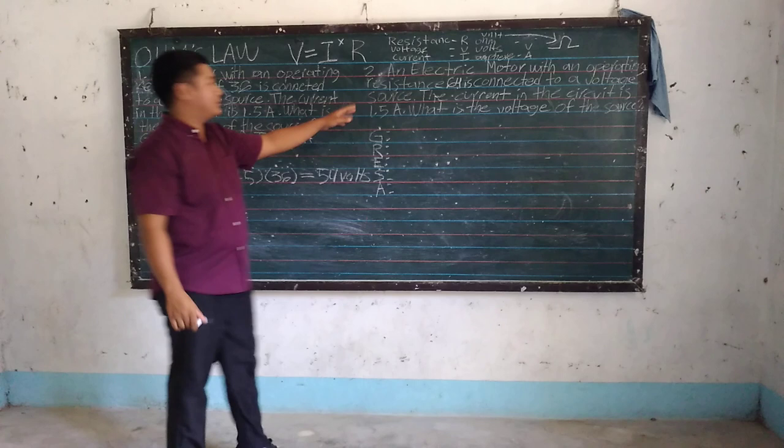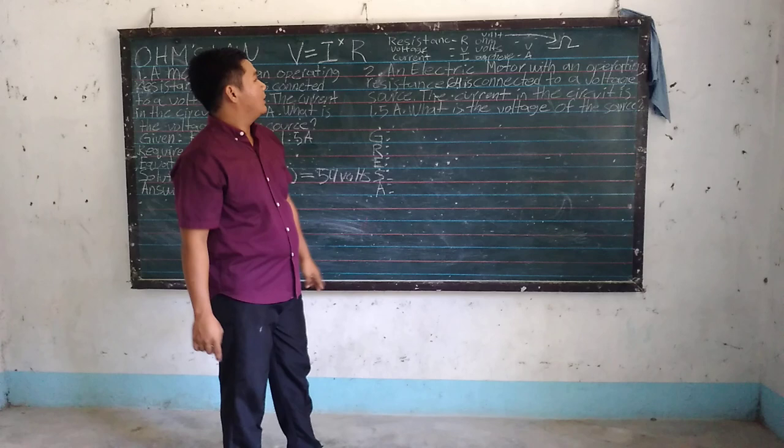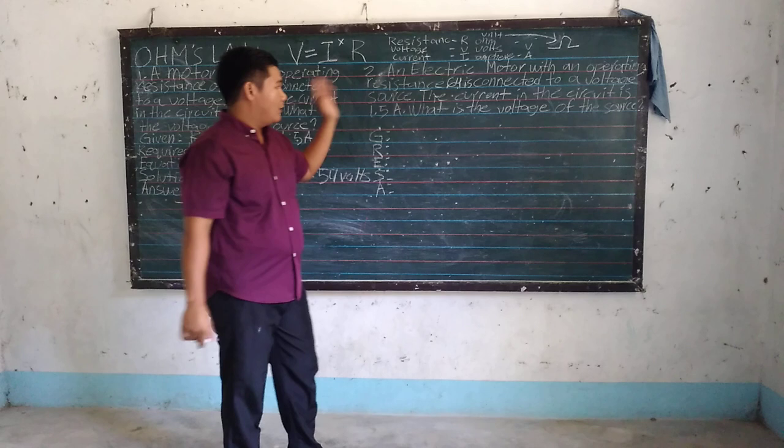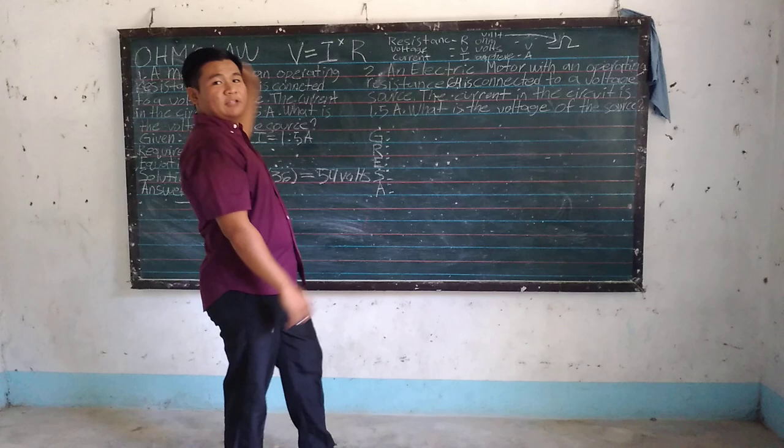The next problem: an electric motor with an operating resistance of 64 ohms is connected to a voltage source. The current in the circuit is 1.5 amperes. The question is: what is the voltage of the source? Again, we are looking for the voltage. I times R equals voltage.